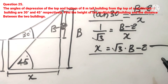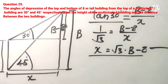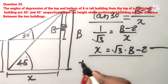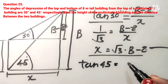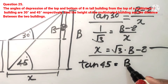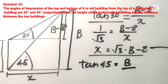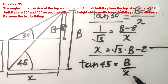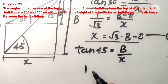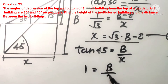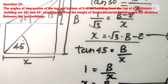Now let's go to the other triangle with 45 degrees. Tangent 45 equals perpendicular upon base. The perpendicular is b and the base is x. Tangent 45 is 1, so 1 equals b upon x. Therefore, x equals b. This is equation number 2.